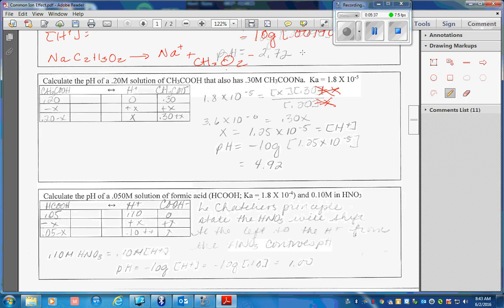We see that without the common ion, our pH was 2.72. With common ion, far less of the acetic acid dissociated, which gives us a higher pH.